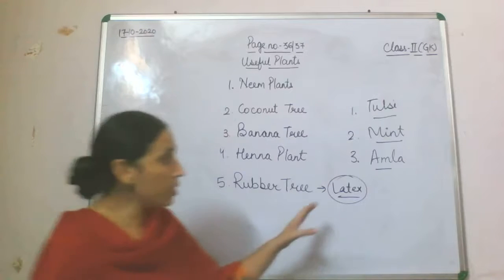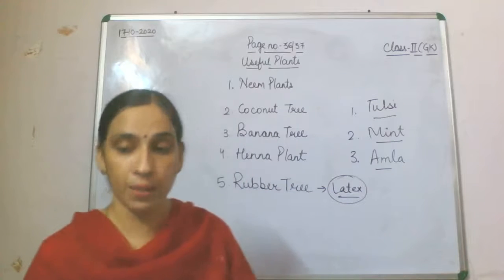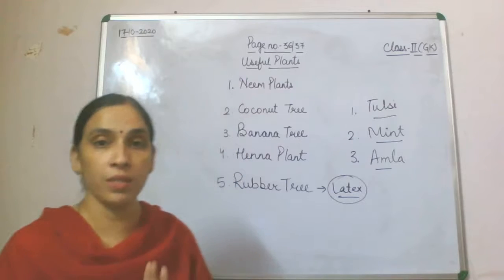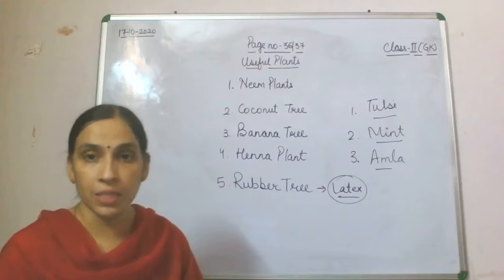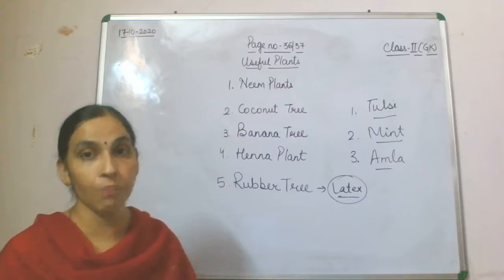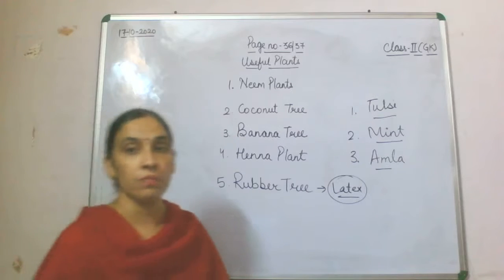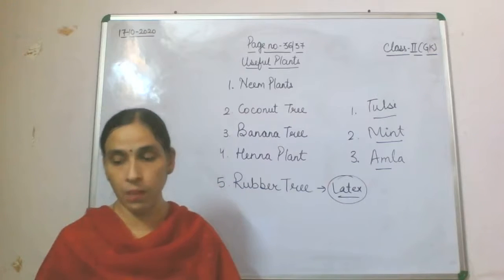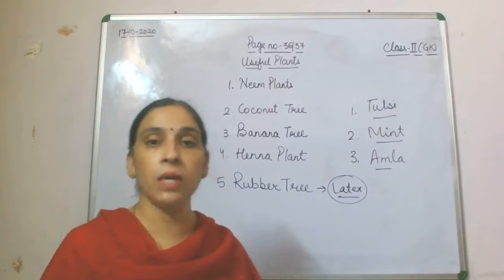Now the third medicinal plant is amla. Amla is very useful for your hair because it contains vitamin C, which is very good for the growth of your hair and makes your hair more black. It is also very good for your teeth and gums. These are a few of the medicinal plants found in our surroundings that we use but are often not aware of all their useful properties.